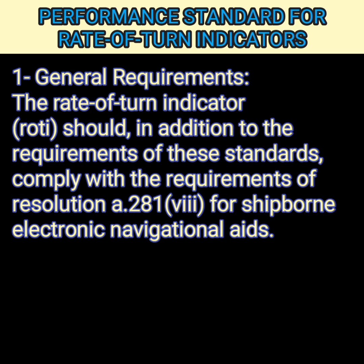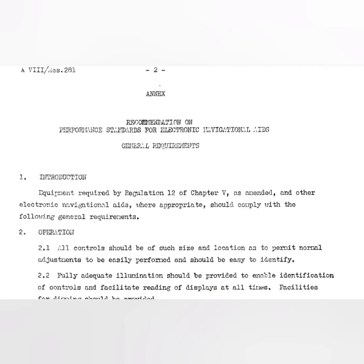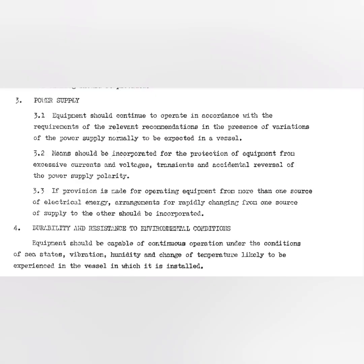That procedure is basically six points. The first is an introduction which says that all electronic equipment, as per regulation 12 of chapter 5 of SOLAS, should comply with the below standards — including basic operation and how it should be displayed. The third point is about power supply, which states that the equipment should normally work with the power supply expected on vessels, be protected from current surges, and if two power sources are available, interchange should be quick.